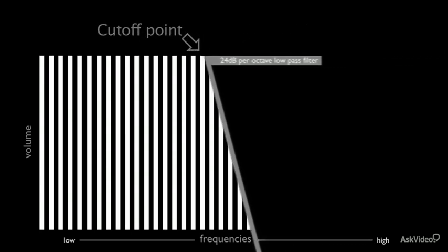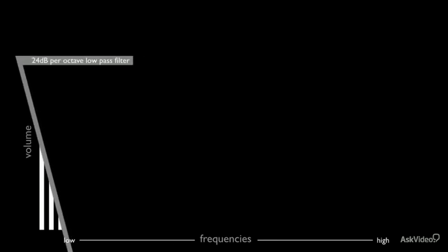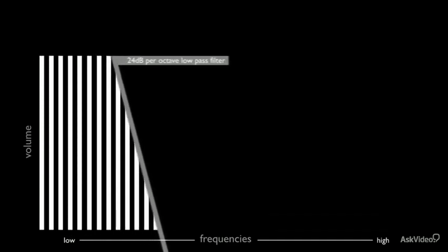The low pass filter successively removes high frequencies from the sound. The harmonics above the cutoff point are progressively attenuated or removed.